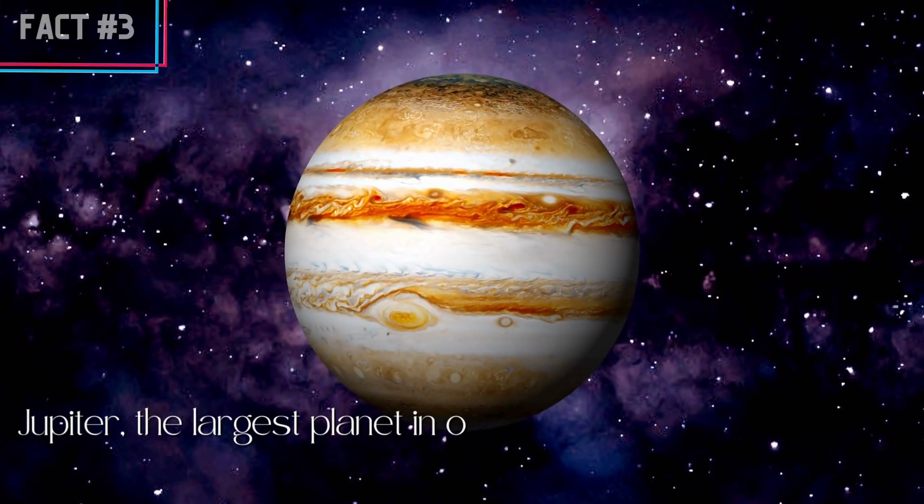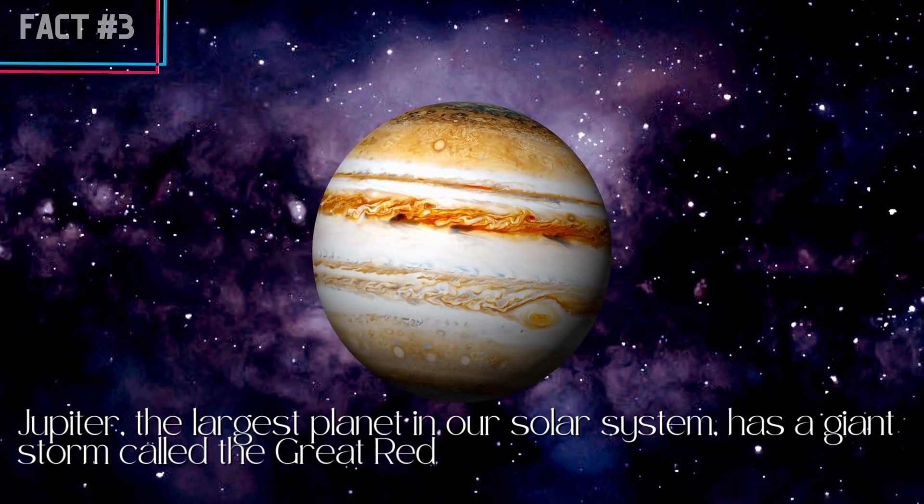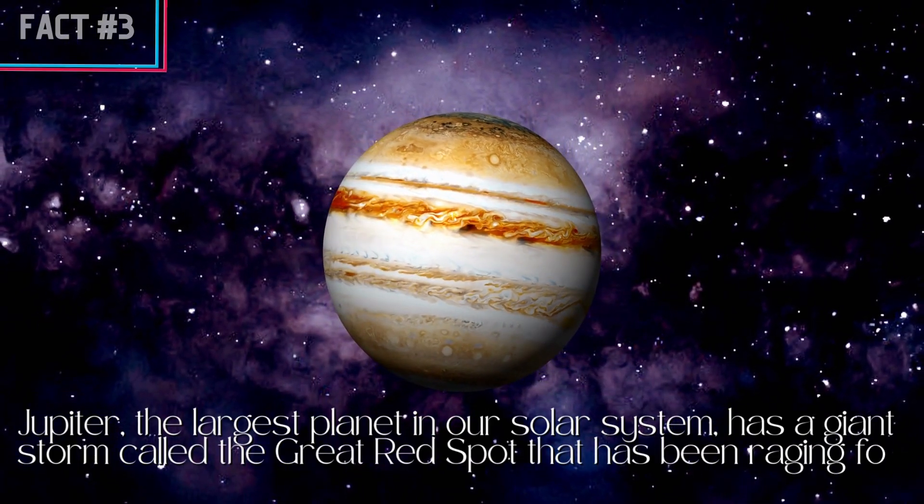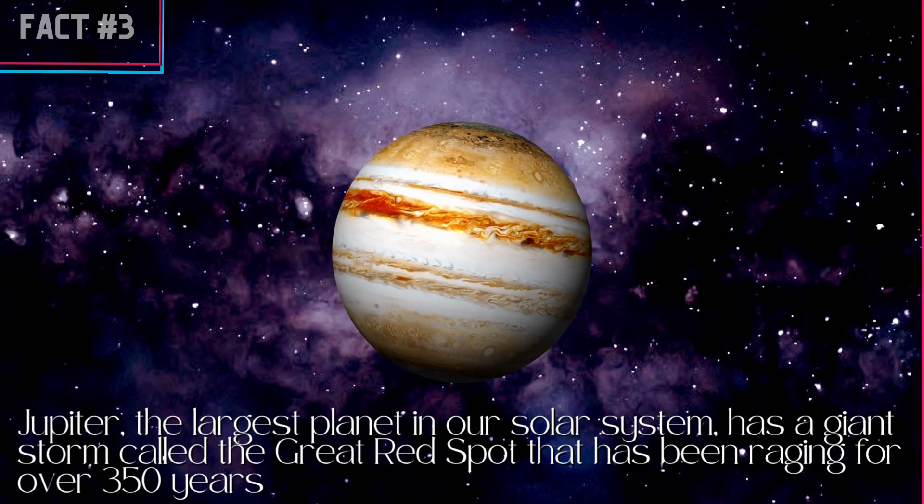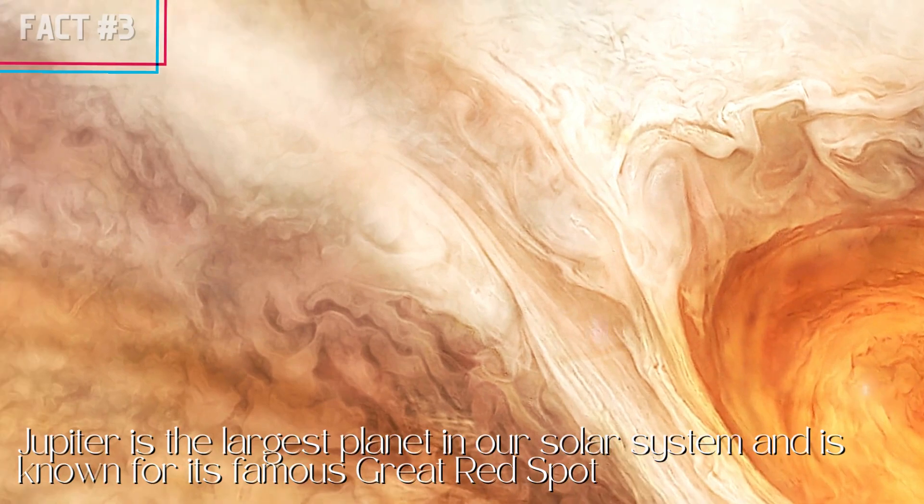Fact number 3, Jupiter, the largest planet in our solar system, has a giant storm called the Great Red Spot that has been raging for over 350 years. Jupiter is the largest planet in our solar system and is known for its famous Great Red Spot.